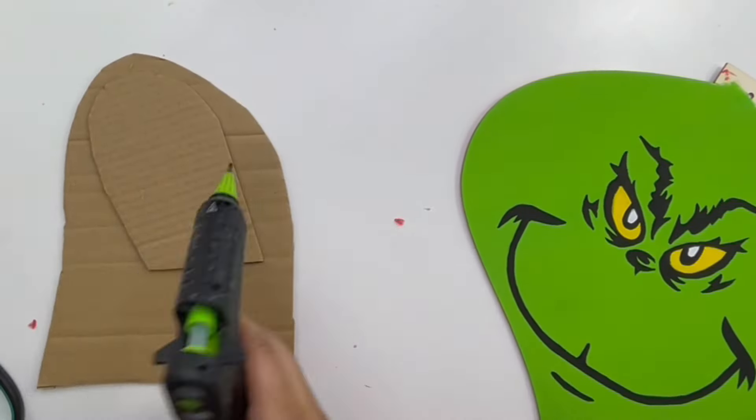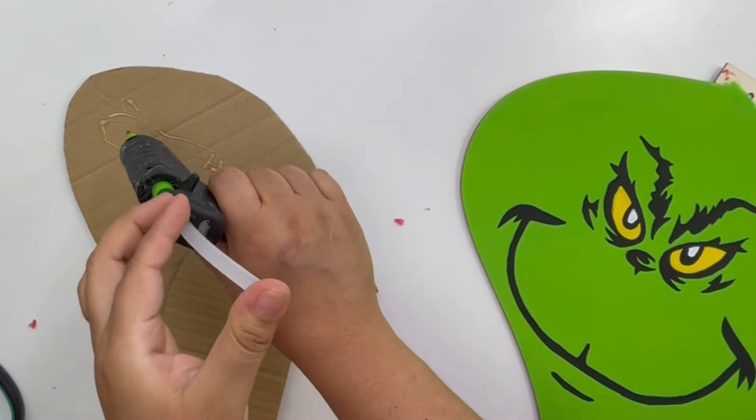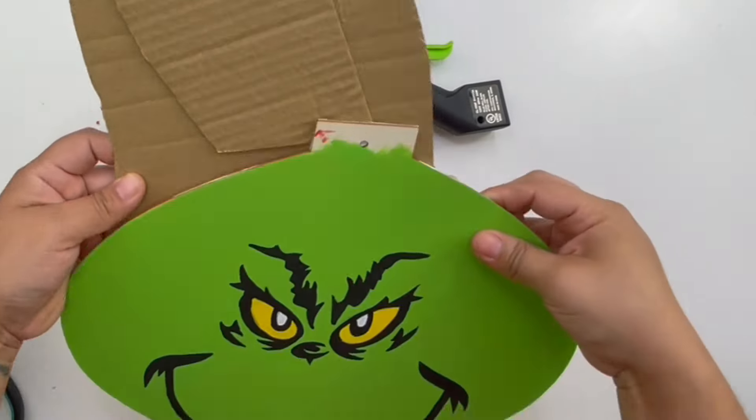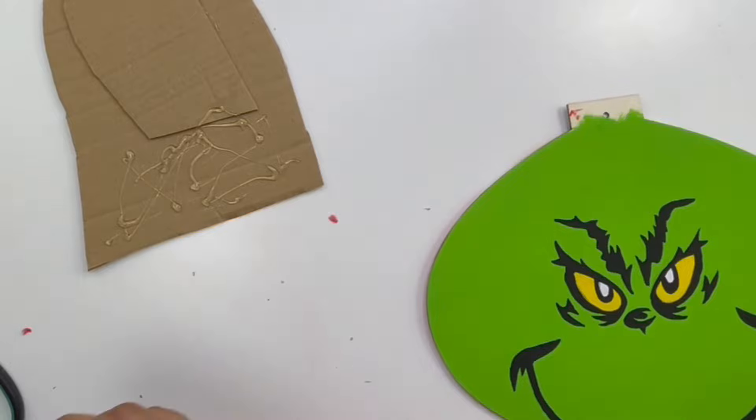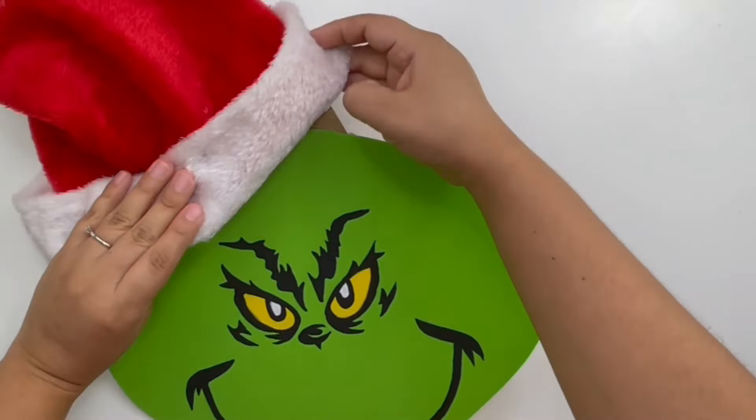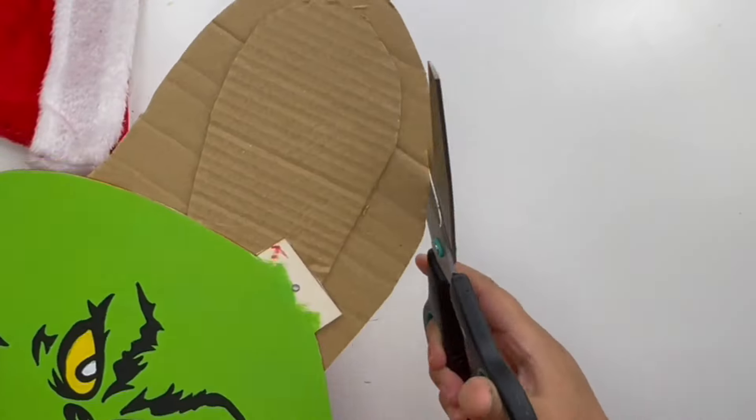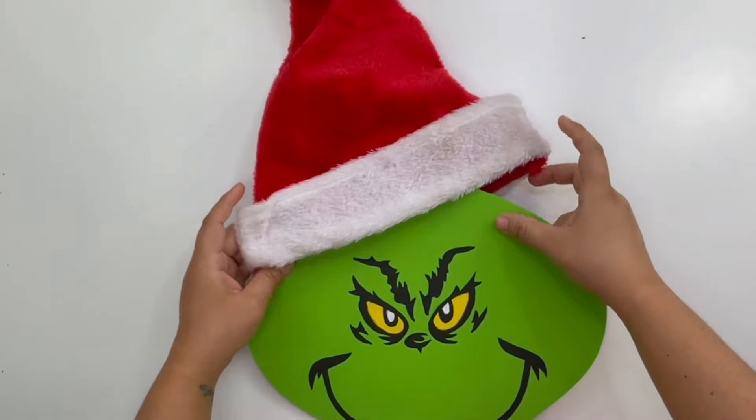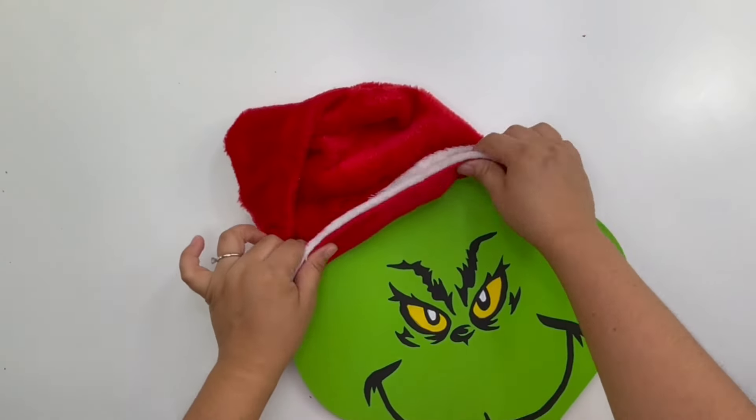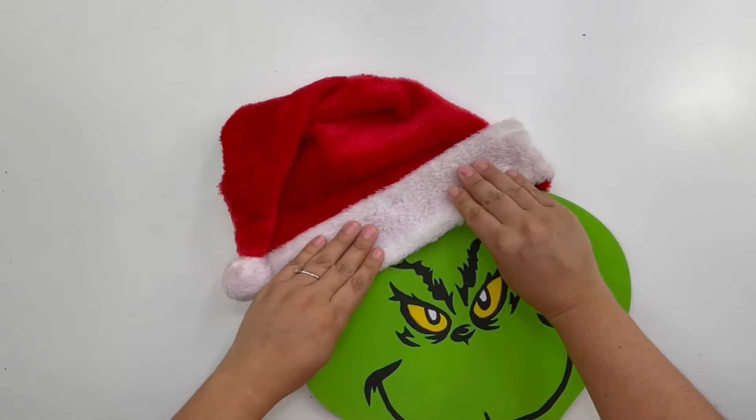So the cardboard that I picked up was a little bit flimsy, it was thin, so I just stacked another one right on top to make it more sturdier. I then went ahead and glued this behind the Grinch face. I then added the hat but the cardboard was way too big so I ended up just trimming it a little more. But that is it, guys. The last thing I did is I added a little hanger on the back and that is it. Look how cute this Grinch face sign turned out.